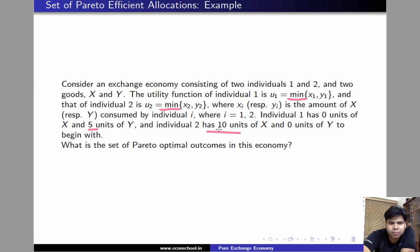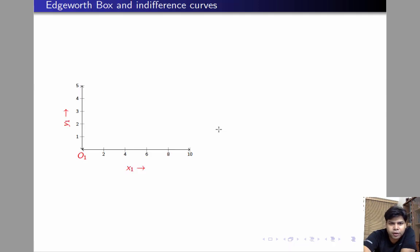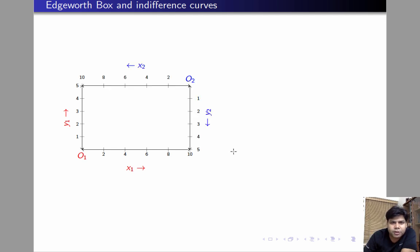Let us begin by plotting the Edgeworth box. These are the axes of individual 1 and these are the axes of individual 2. So the dimension of this Edgeworth box is 10 by 5, because there are 10 units of x and 5 units of y available in this economy.